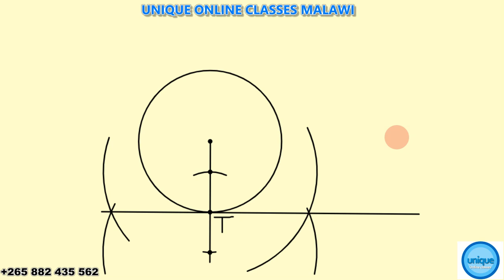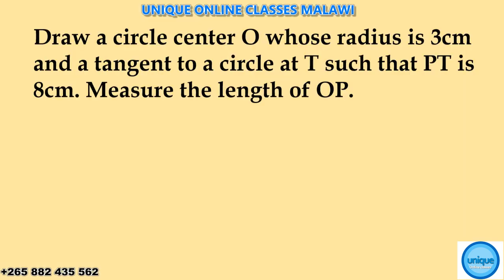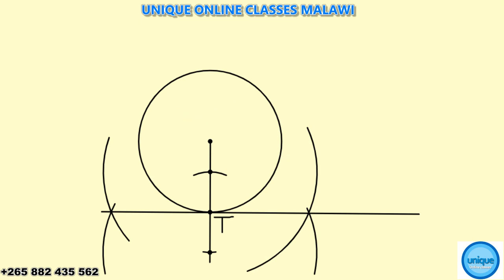Let's do a simple question. Draw a circle center O whose radius is 3 centimeters. Construct the tangent to the circle at T such that PT is 8 centimeters. We'll measure OP. The distance from point T to P is 8 centimeters.